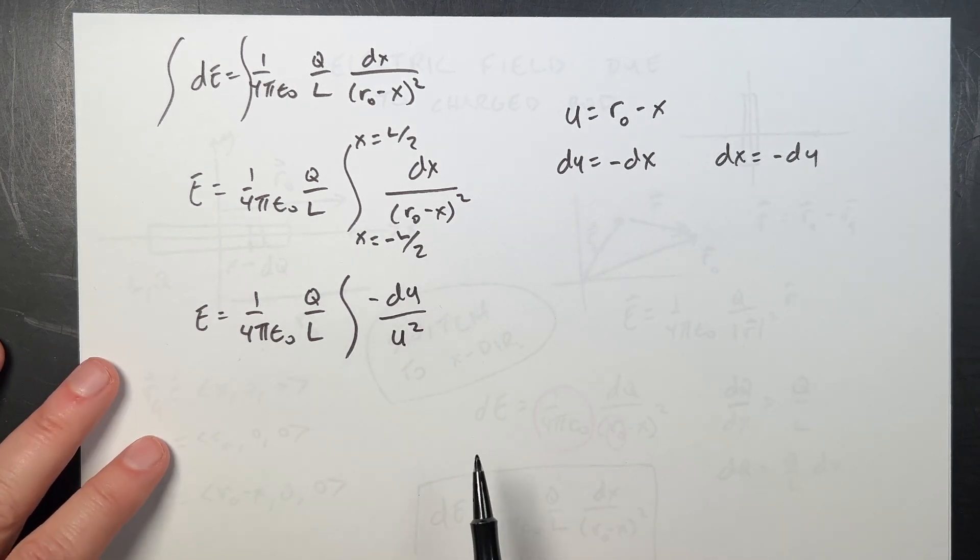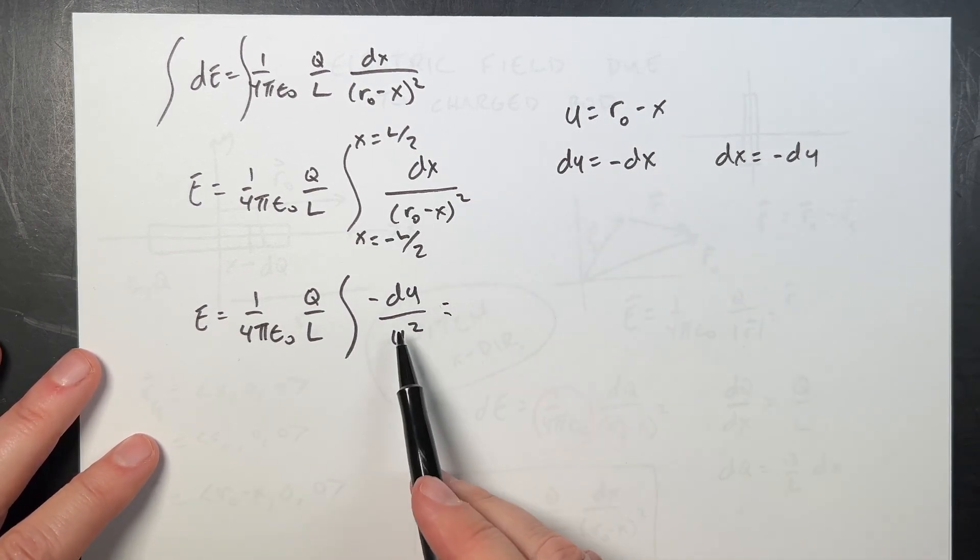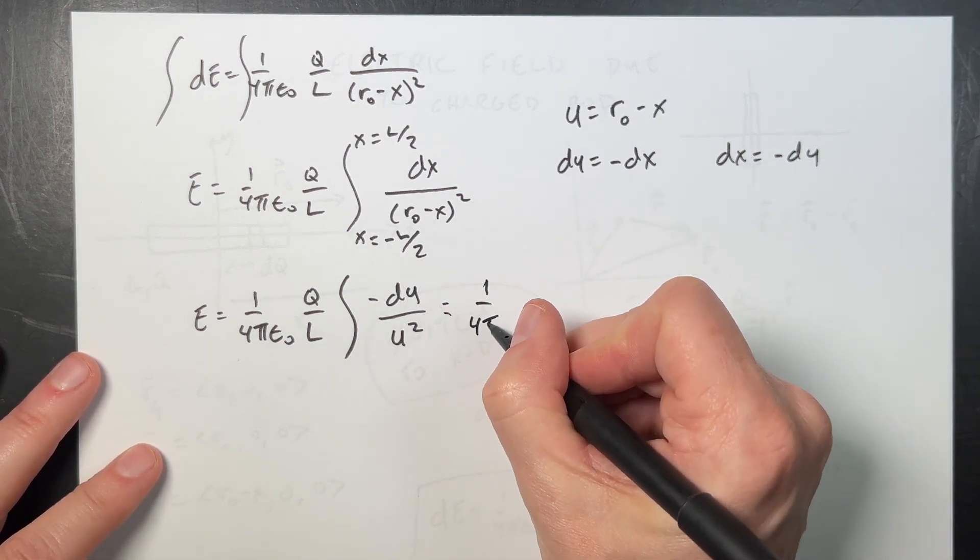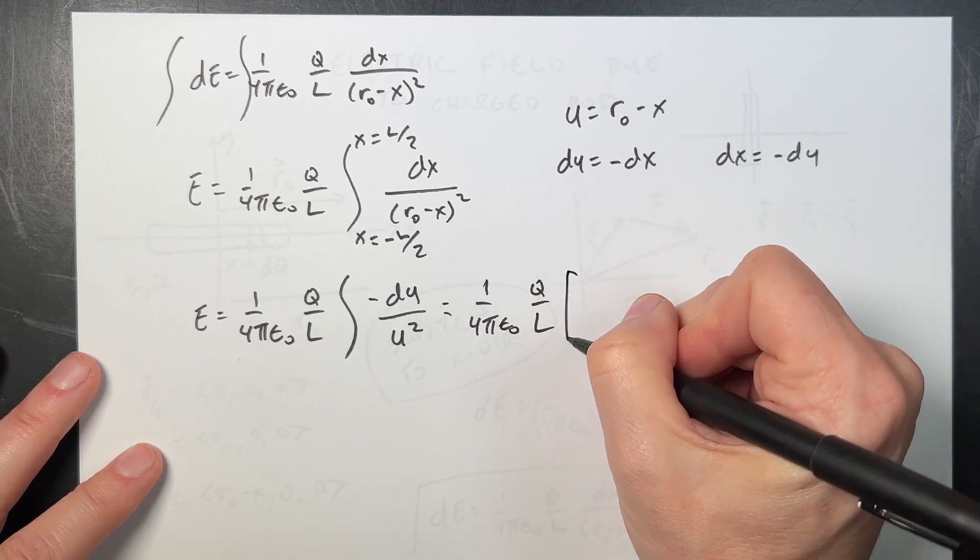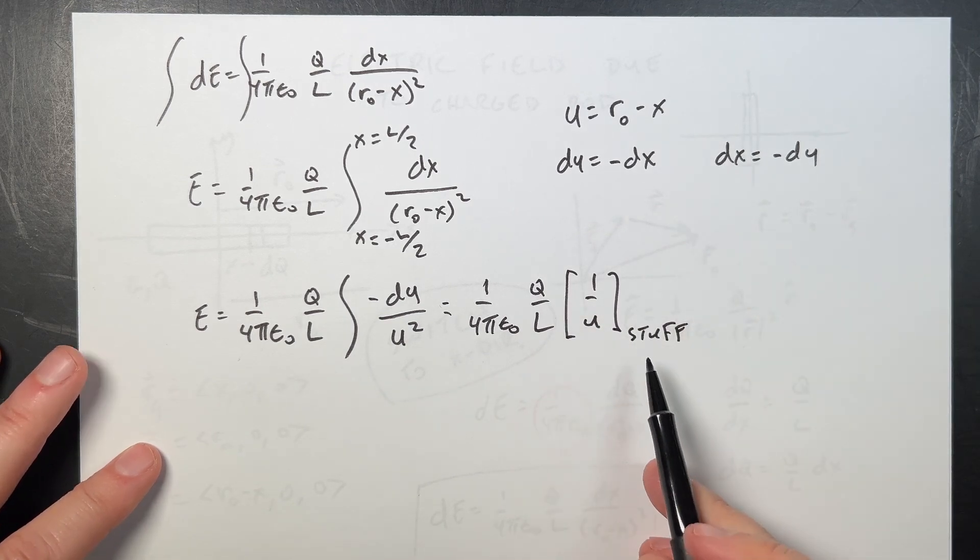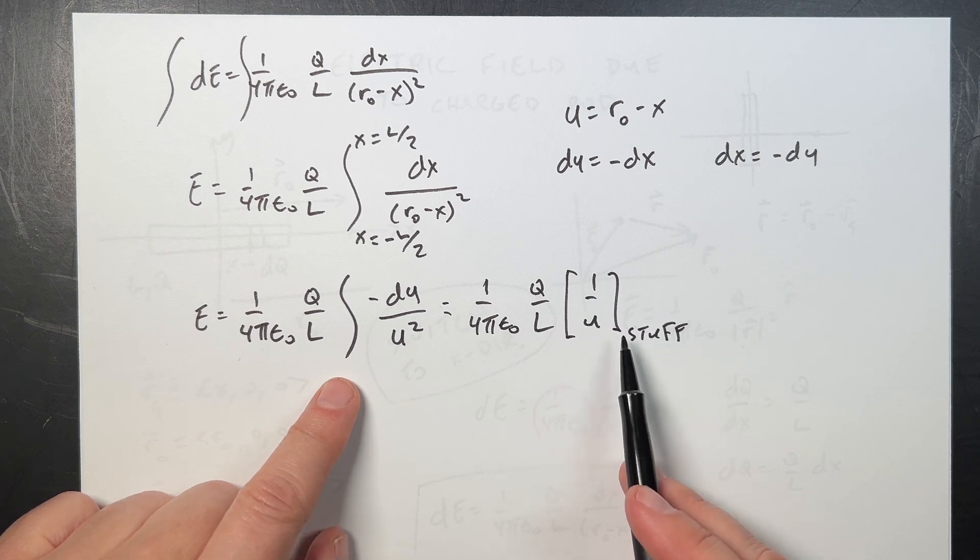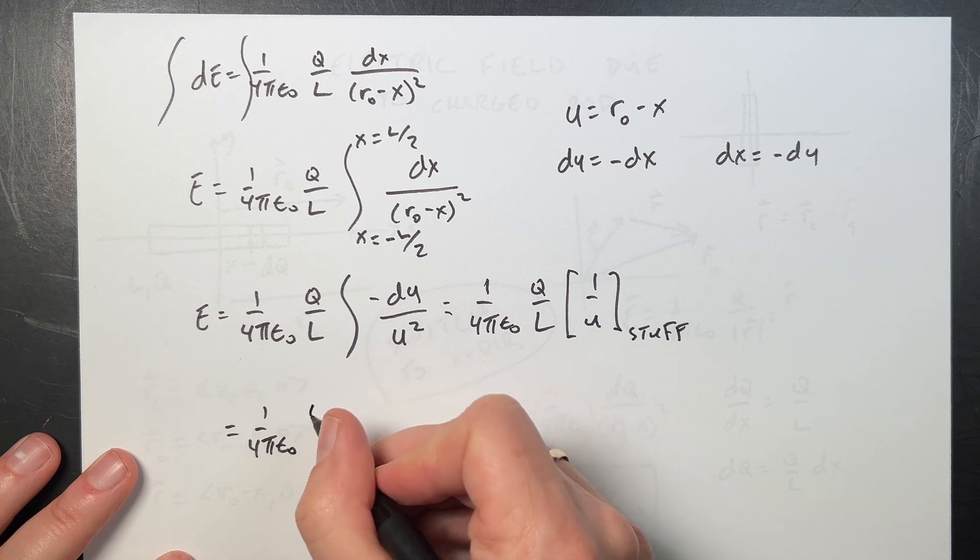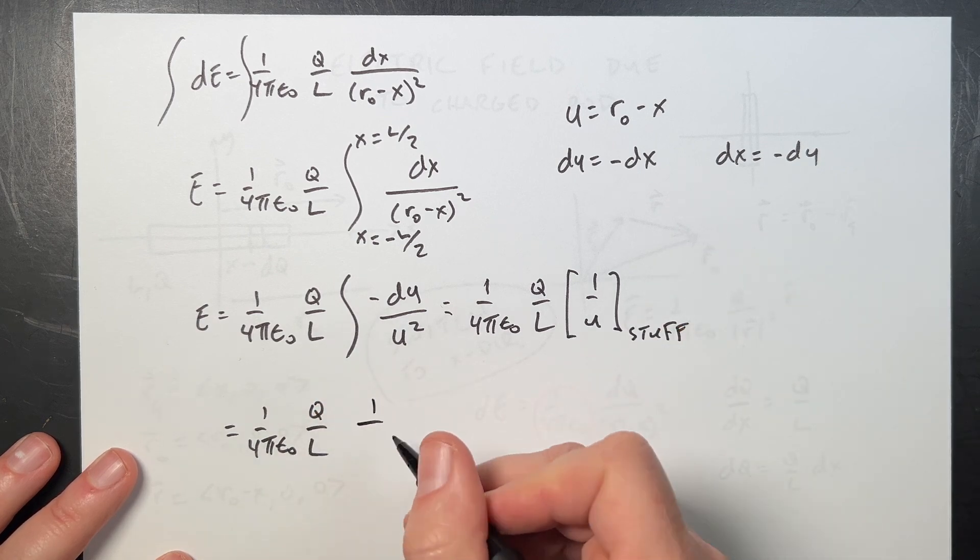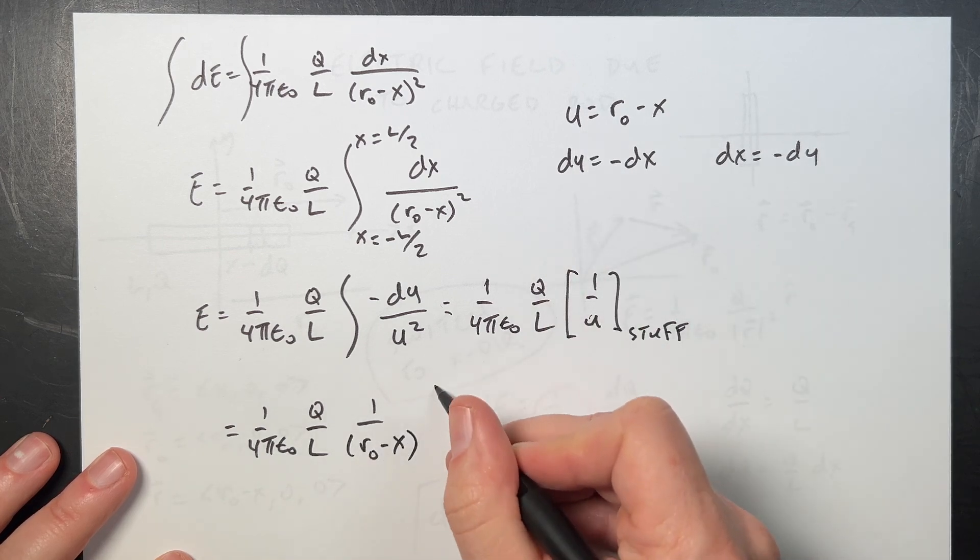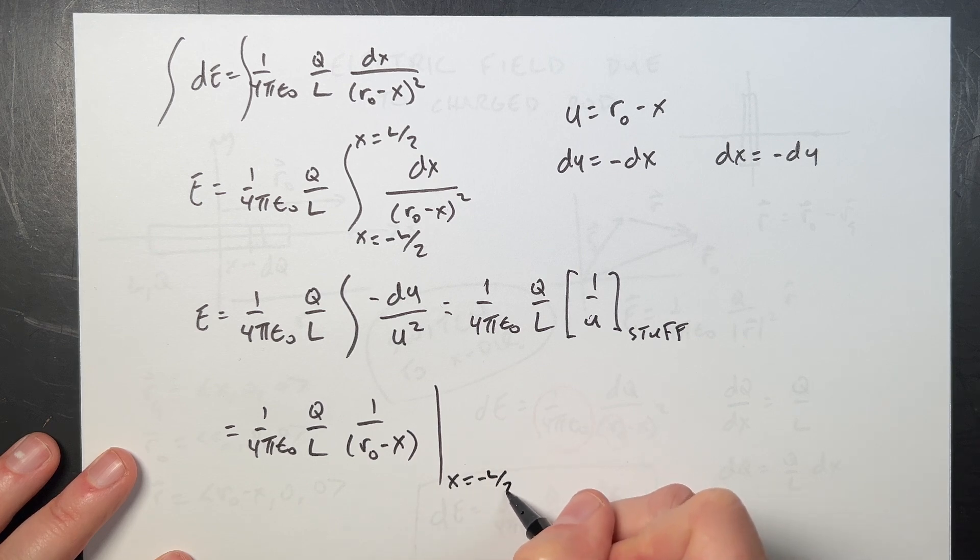So if I integrate that, I'm going to get negative 1 over u. So if I do that, I get 1 over 4π epsilon naught q over L, 1 over u. So I don't want, you could change the limits of integration to u, but instead I'm going to change this back to x and use my original limits of integration. So if I do that, I get 1 over 4π epsilon naught q over L, 1 over u, but u is that, r0 minus x. Now I can integrate from x equals negative L over 2 to L over 2.